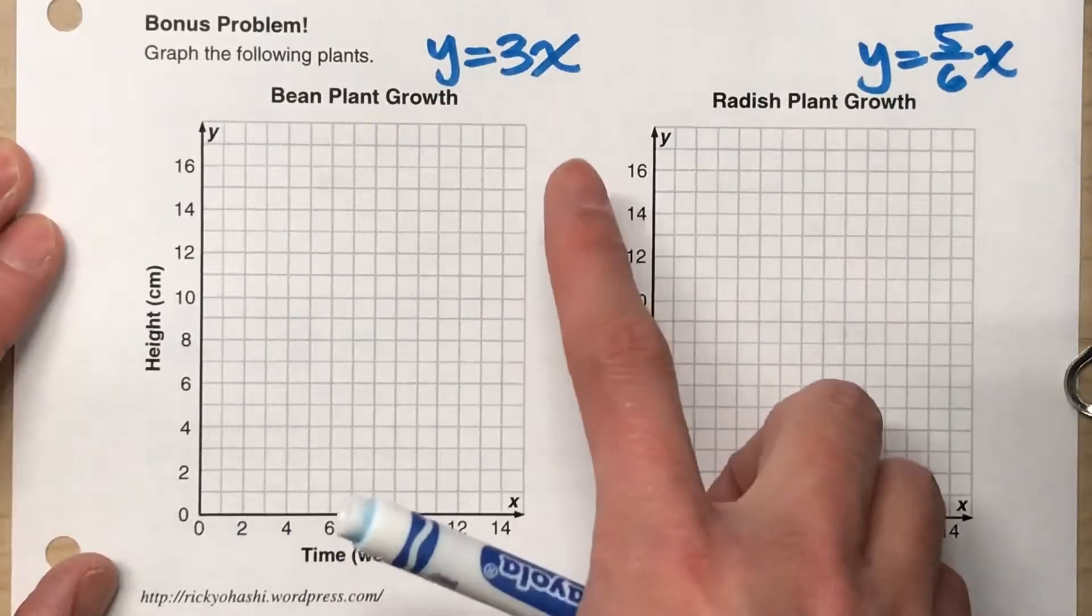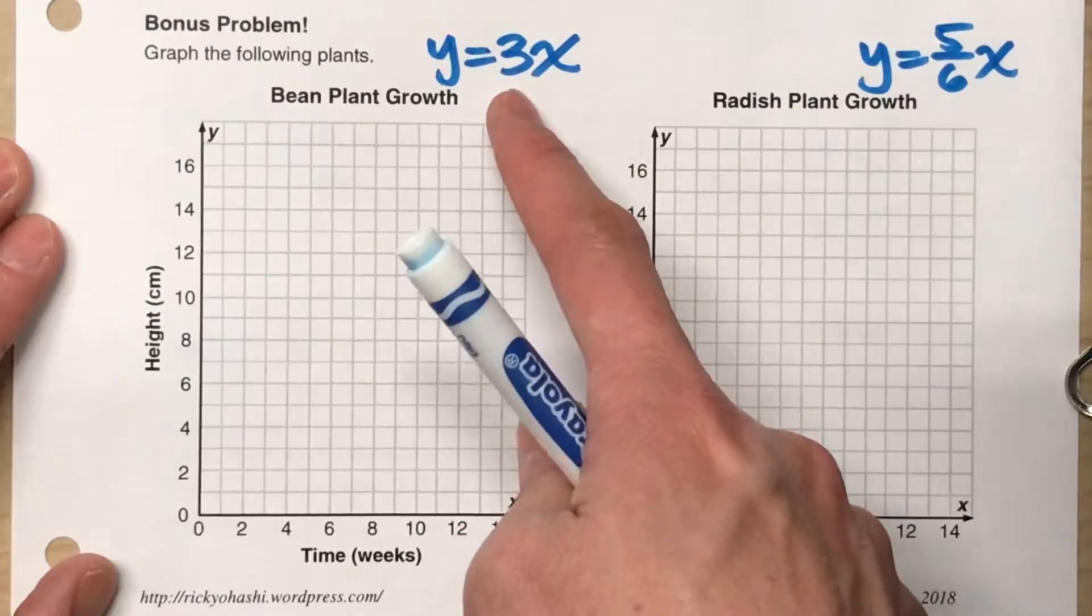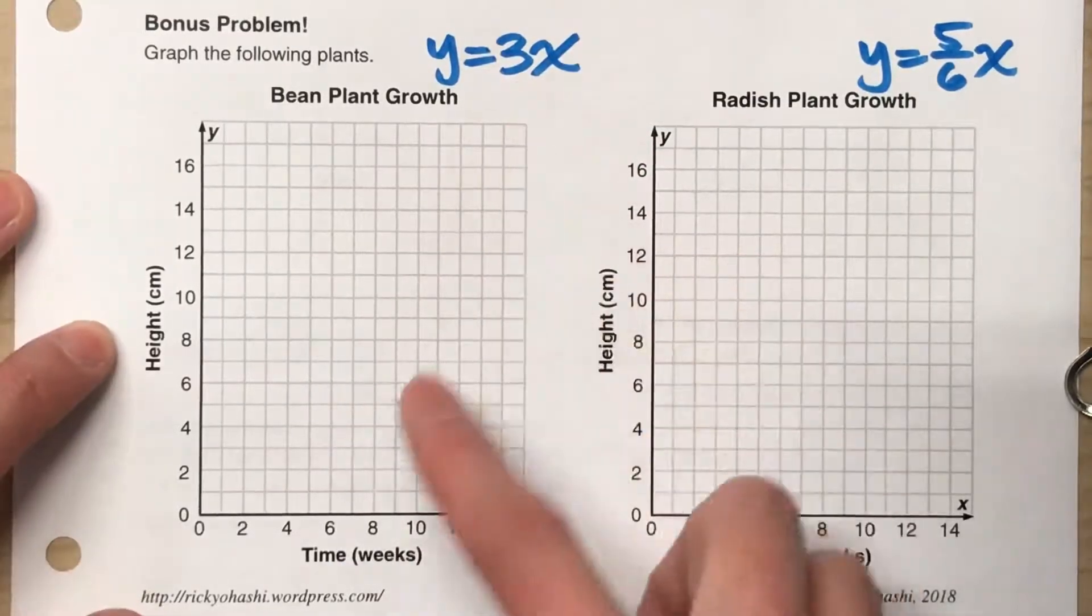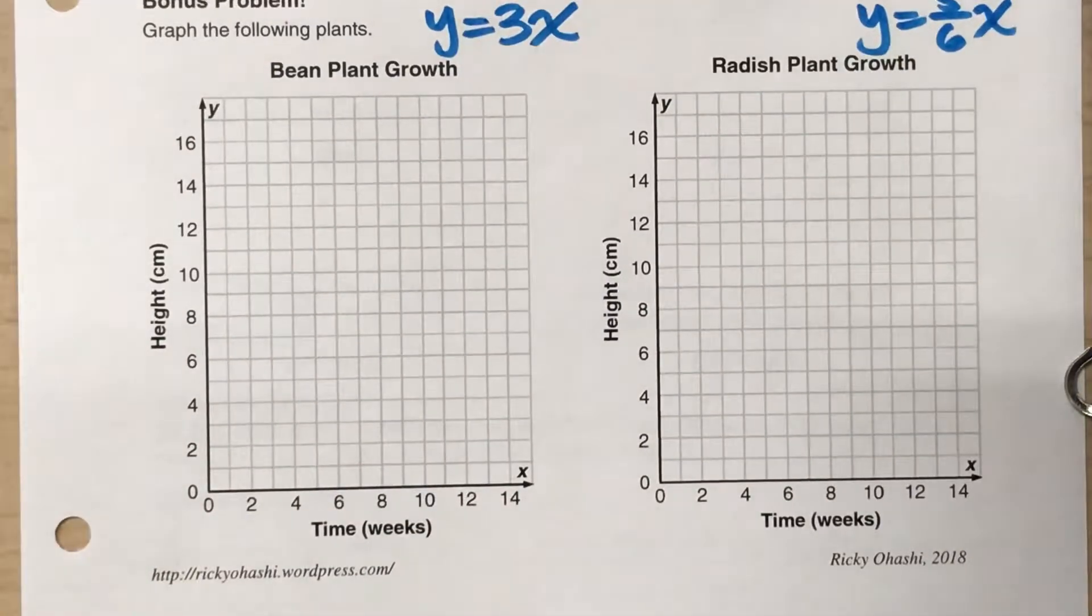All right, so the first thing we really need to focus on is just the unit rate. The unit rate is 3. What that tells us is it's growing 3 centimeters per week. So to graph it,